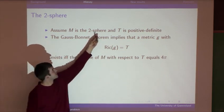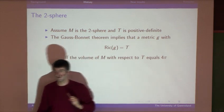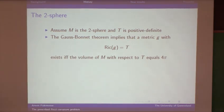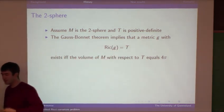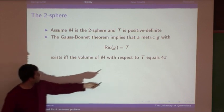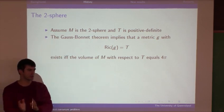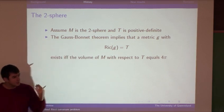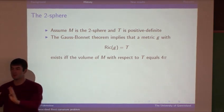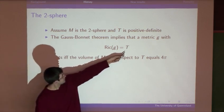In this situation, you can apply the Gauss-Bonnet theorem. Using Gauss-Bonnet, you can show rather easily that a Riemannian metric G with Ricci curvature T exists if and only if the volume of the manifold with respect to T equals 4π. Since T is positive definite, you can treat T as a Riemannian metric, compute the volume of the manifold with respect to T, and it turns out a metric with this Ricci curvature exists if and only if that T-volume is 4π.